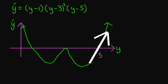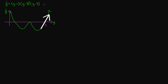So how do we do that? Let's first define f of y equal to (y minus 1)(y minus 3) squared times (y minus 5), which equals y prime. We will be doing a first order Taylor expansion of f around y equal to 5. First note that f of 5 is equal to 0 — just plug in 5 and you get (5 minus 5) which is 0.